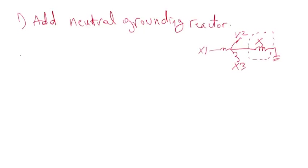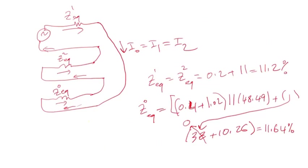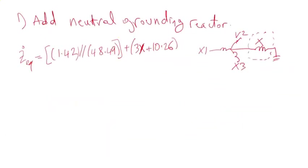So I'll fit it here. The equivalent zero sequence impedance from the diagram is 1.42%, which is in parallel with 48.49%, plus three times the reactance of the neutral grounding reactor, plus 10.26%. That's the new zero sequence impedance. Comparing to the previous calculation of the zero sequence impedance, what I added is just this term here.